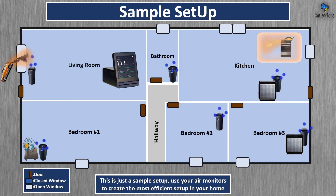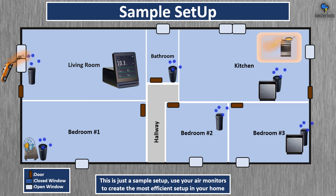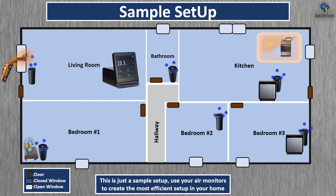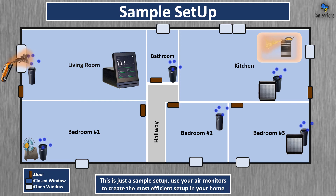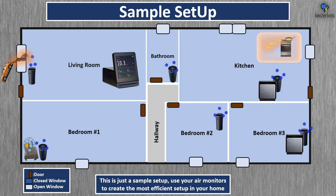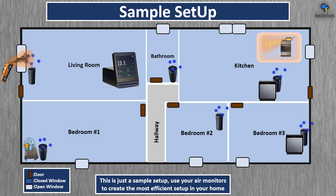Sample home setup with air purifiers and ionizers — it's really about preference. Bedroom 1 might want a fan with an ionizer to spread ions. Bedroom 2 might just want a simple quiet ionizer. Bedroom 3 might want an air purifier with an ionizer for maximum air cleaning. The kitchen probably wants both due to cooking pollution. All bathrooms should have an ionizer because of high humidity — to kill mold before it can grow. In the living room, place an ionizer near the window if you live near traffic, to kill pollution before it enters.